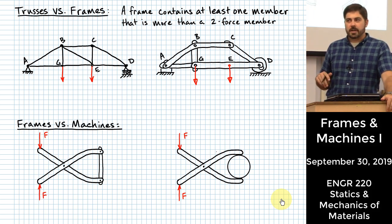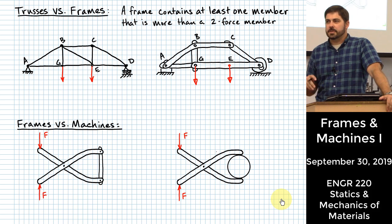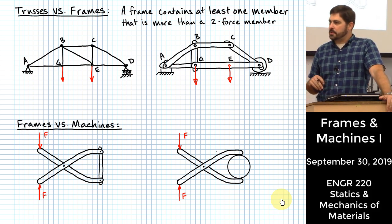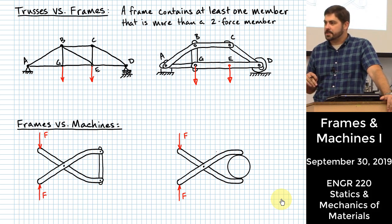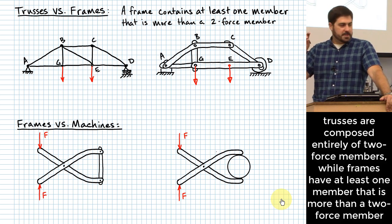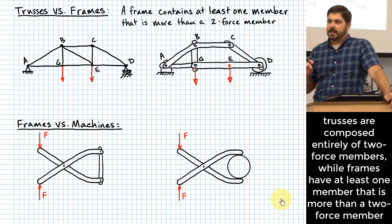Today we're going to continue talking about structures, and we're going to get into a different kind of structure. What you've seen so far are called trusses. Who remembers what the big deal was about trusses? What makes a truss? Someone says two-force members. It is a structure made entirely of two-force members.